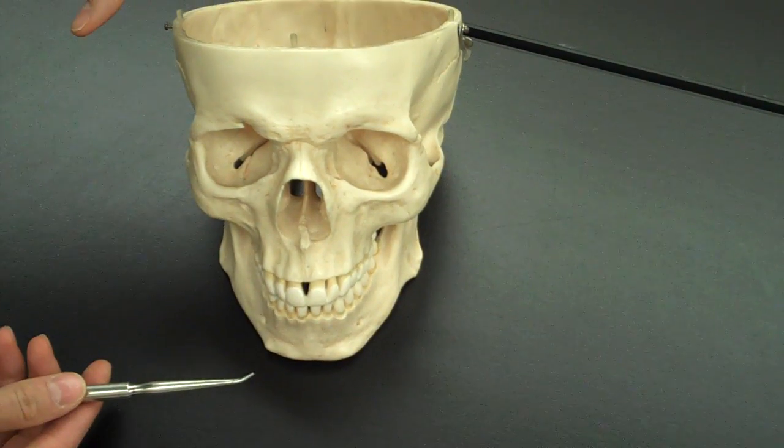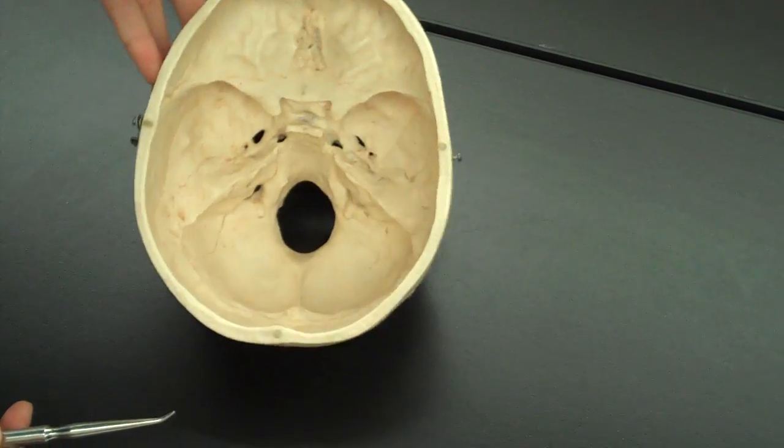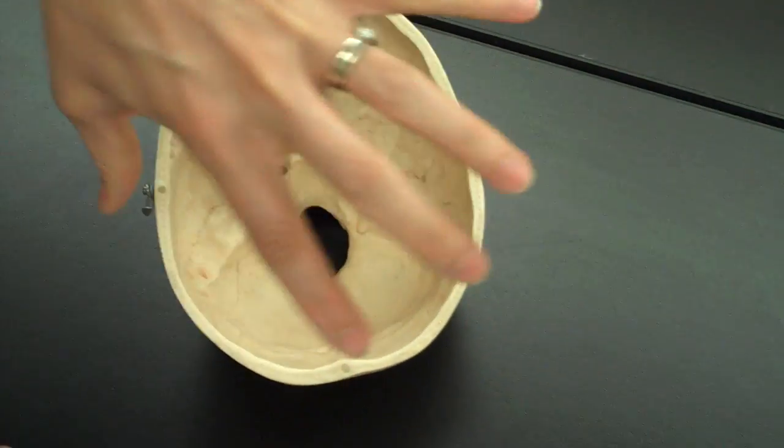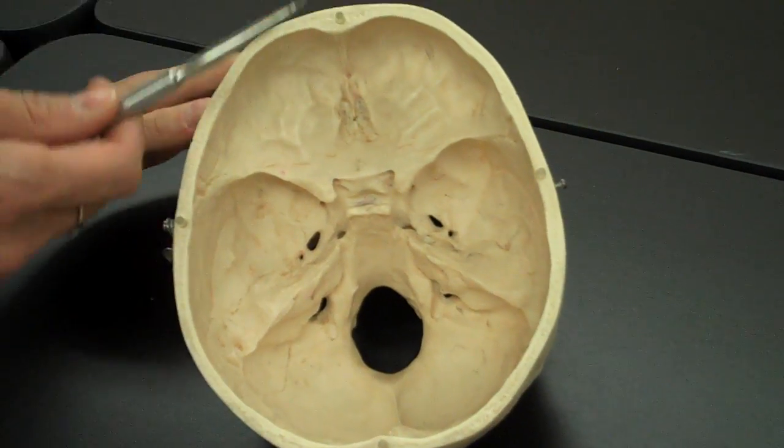So here you see again the anterior view of the skull, but I'm going to turn this around so that we can look into the skull. We've taken off the top where you would see the parietal and frontal bones. We're looking on the inside, so this is a cross-section.